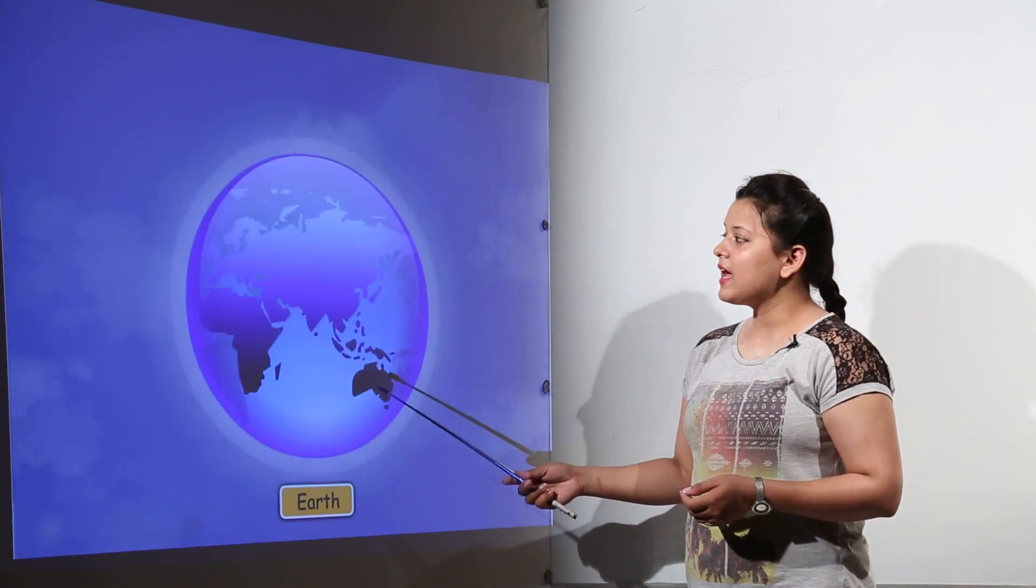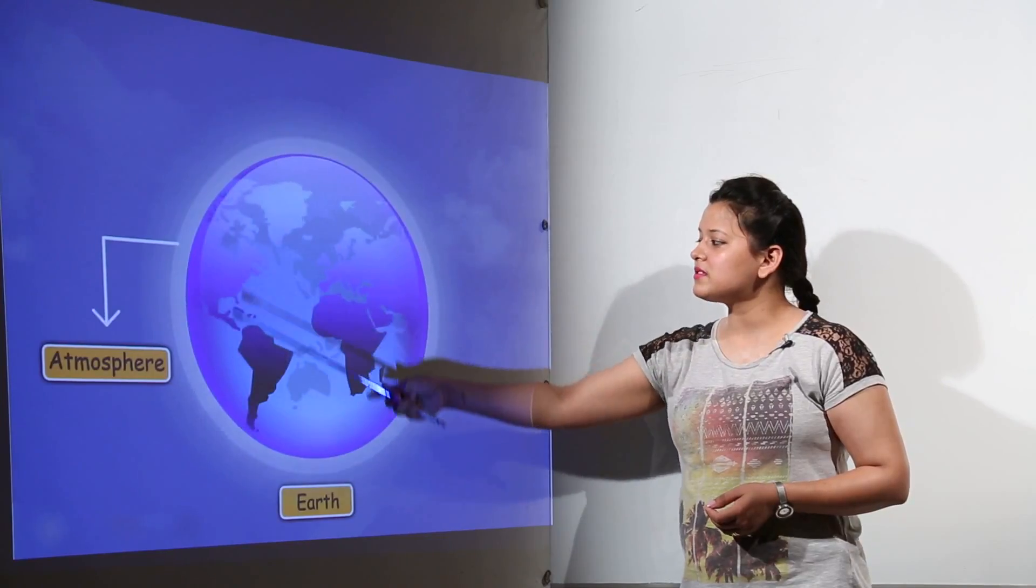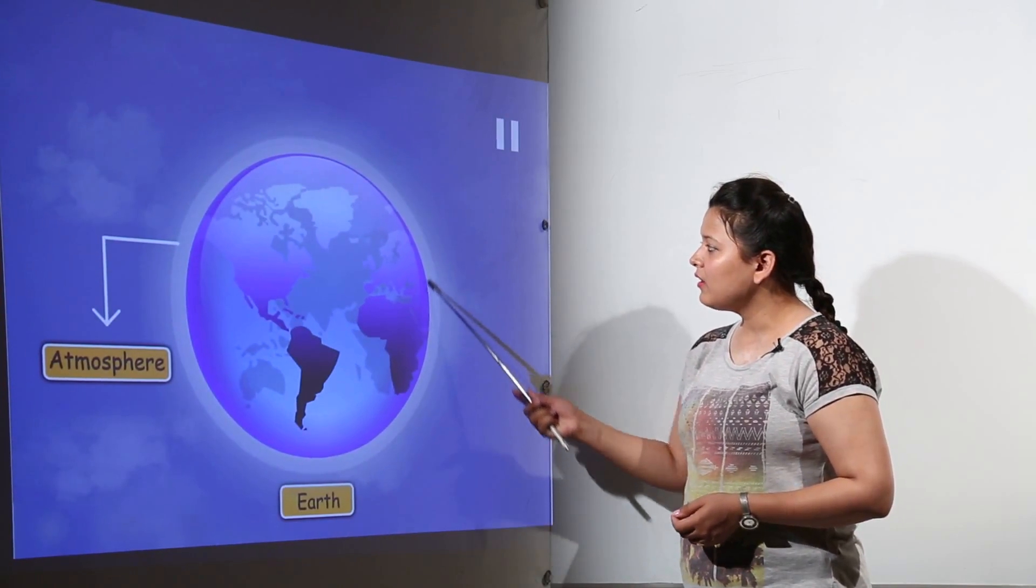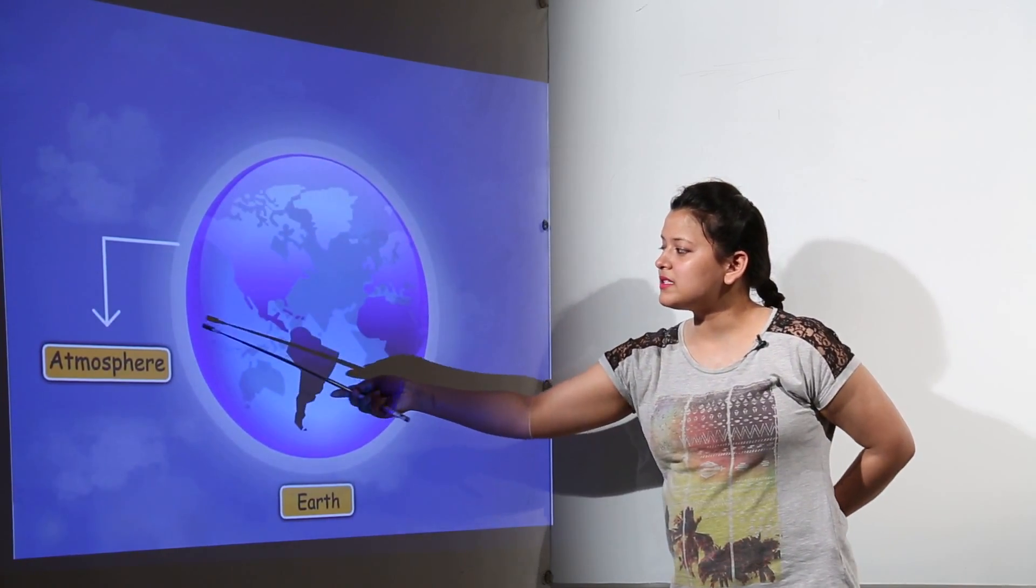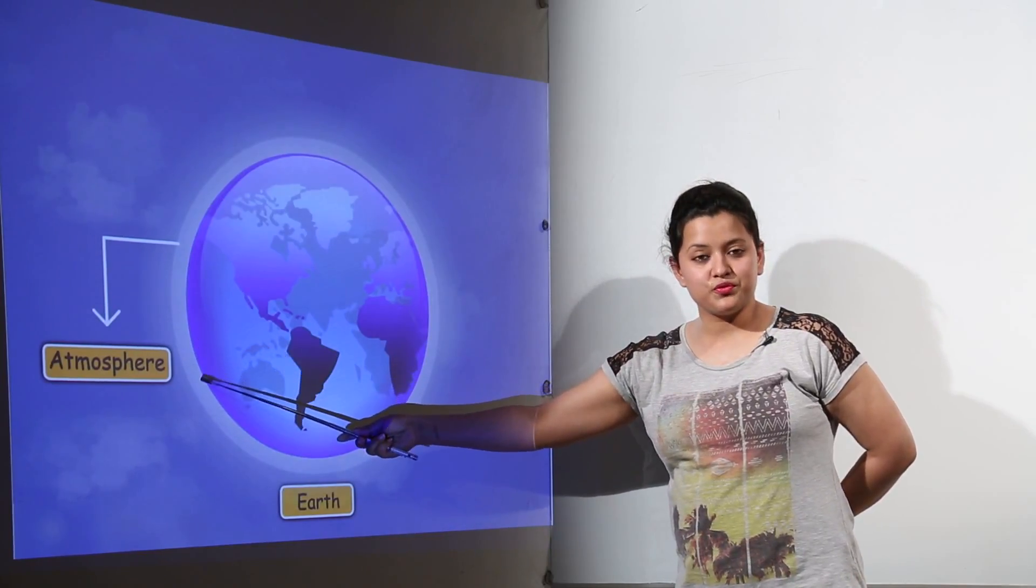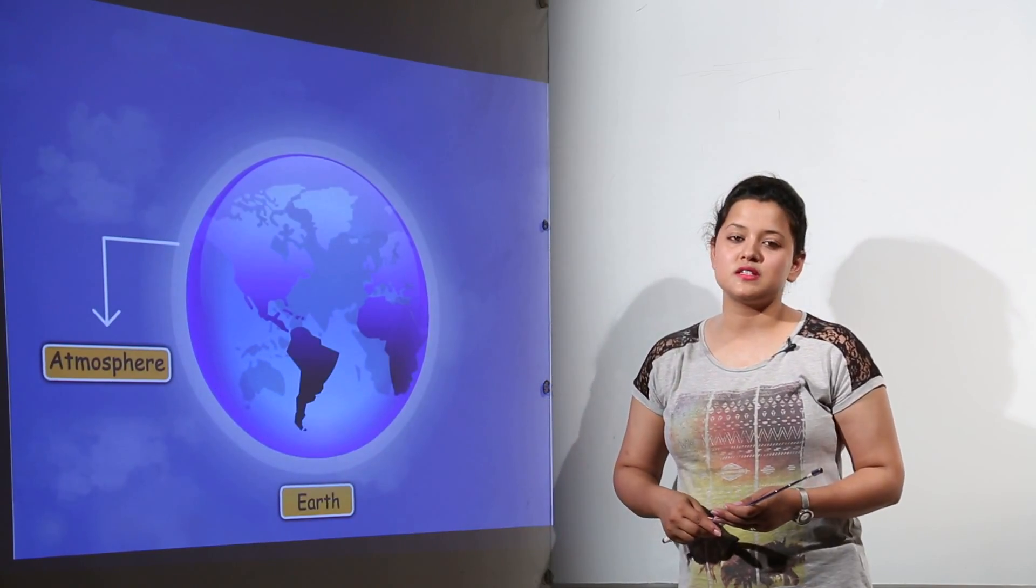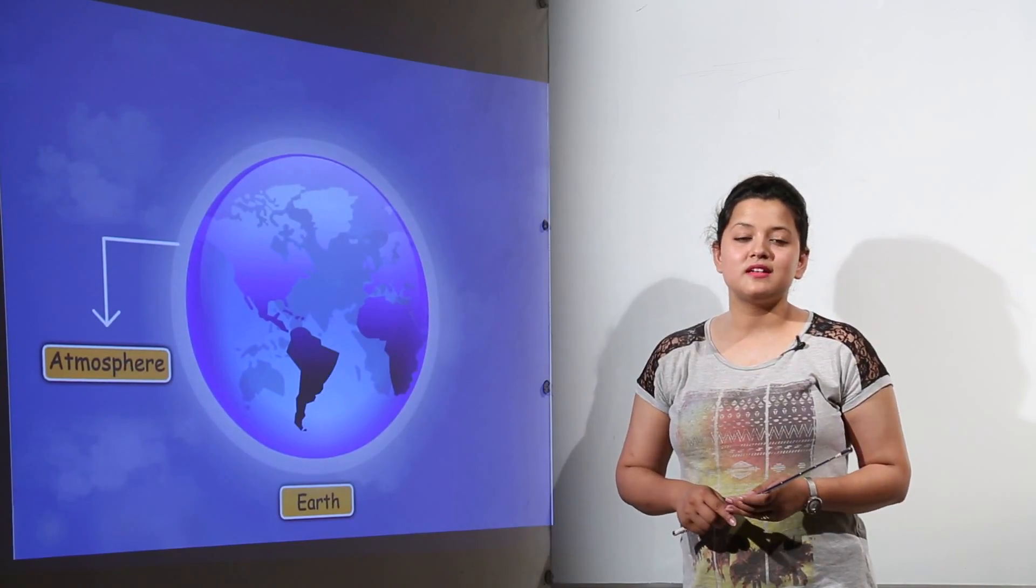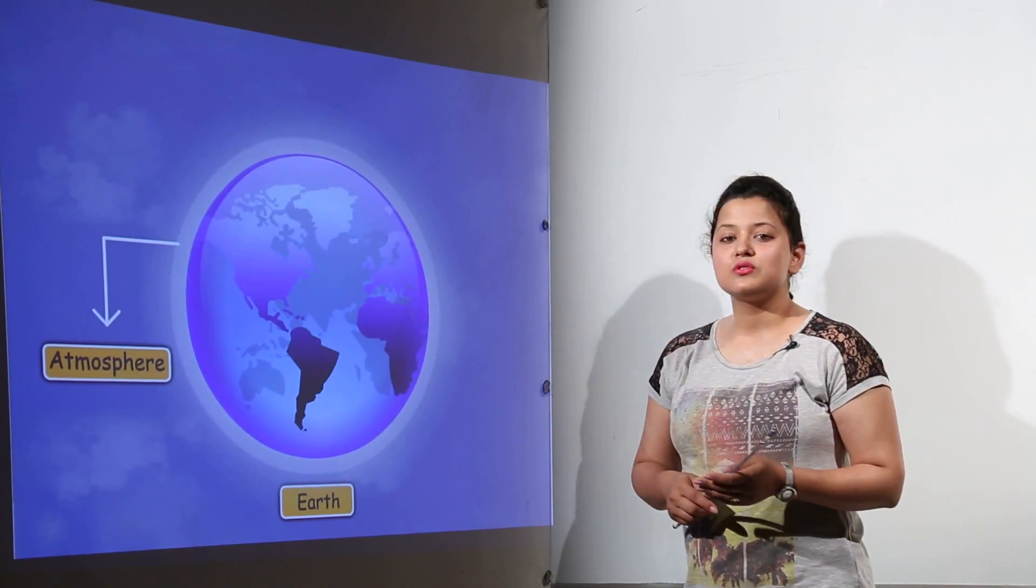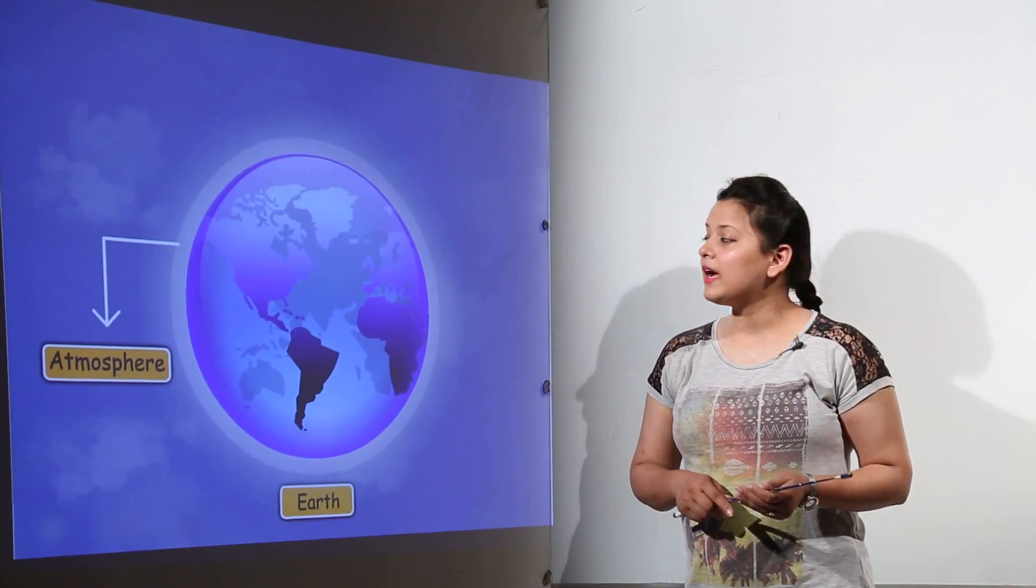The earth, that is our planet, has a layer of few kilometers around it. That layer of few kilometers around it is the atmosphere. This atmosphere contains the mixture of gases, mixture of so many gases together that is containing the air.